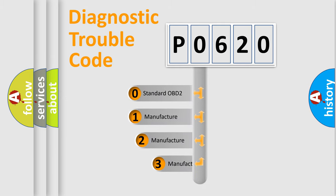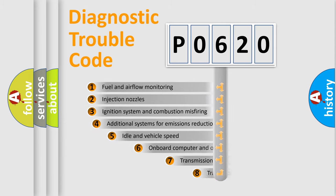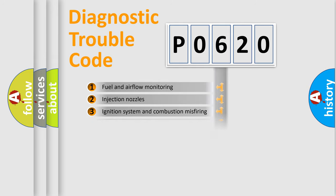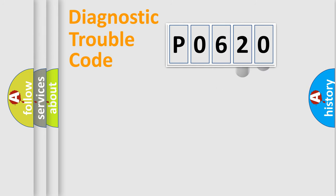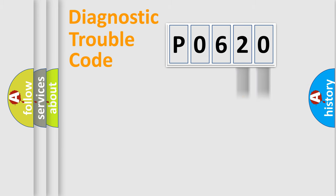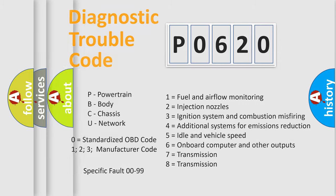If the second character is expressed as zero, it is a standardized error. In the case of numbers 1, 2, or 3, it is a more manufacturer-specific expression of a car-specific error. The third character specifies a subset of errors. This division is valid only for the standardized DTC code, and only the last two characters define the specific fault of the group.